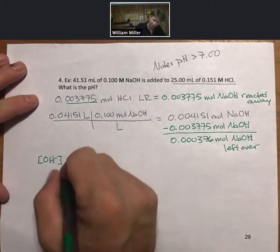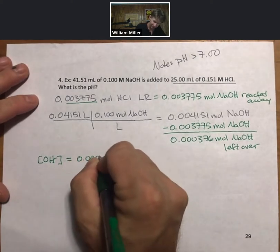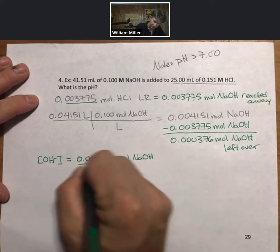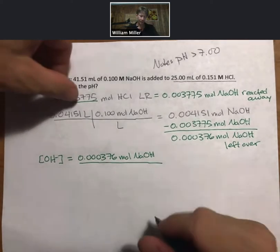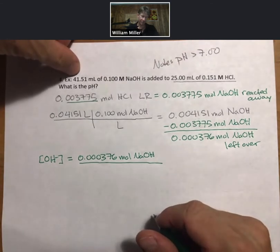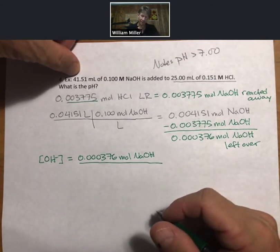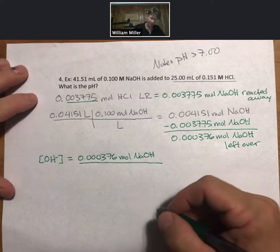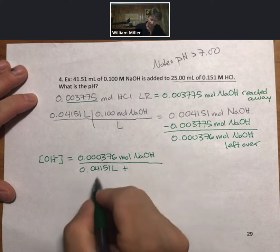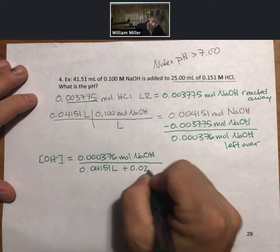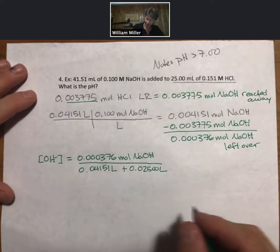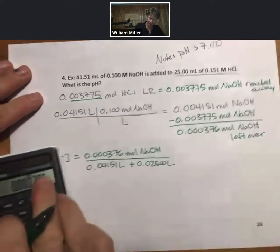I know my moles of sodium hydroxide. Here I'm going to write my total volume in the denominator. I know that I have 25 plus 41 milliliters. I'm going to write them both out in liters like I did in the previous example. I have my liters of sodium hydroxide, I have my liters of hydrochloric acid, and this time I'll just do it all in my calculator.